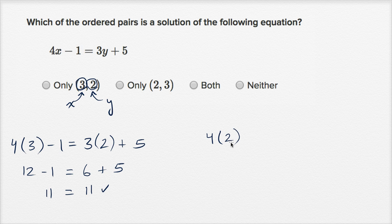So 4 times x, 4 times 2 minus 1 is equal to 3 times y. Now y, we're testing to see if it can be 3, so 3 times 3 plus 5. Let's see if this is true. 4 times 2 is 8 minus 1. Is this equal to 3 times 3? So that's 9 plus 5.